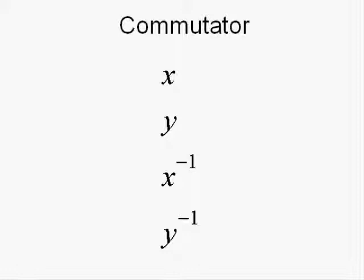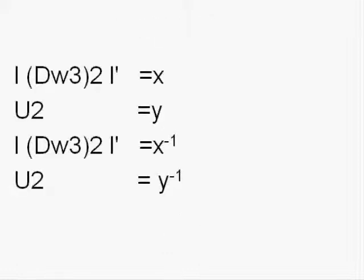We can see this if we rewrite this algorithm as the following. Here, I have made an equivalent to the corresponding pieces of a commutator form. Clearly, the second piece, which is equivalent to y, is inverted in the fourth piece, for u2 is undone with u2.